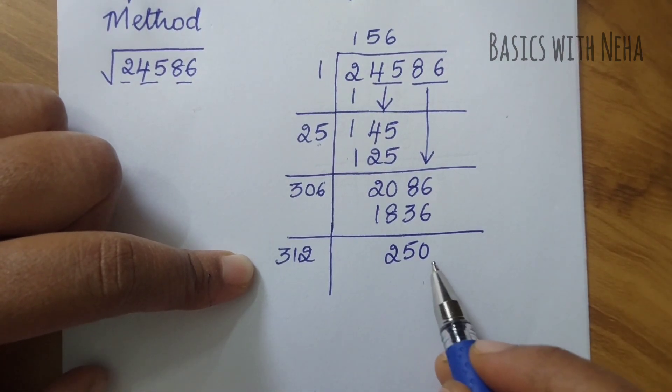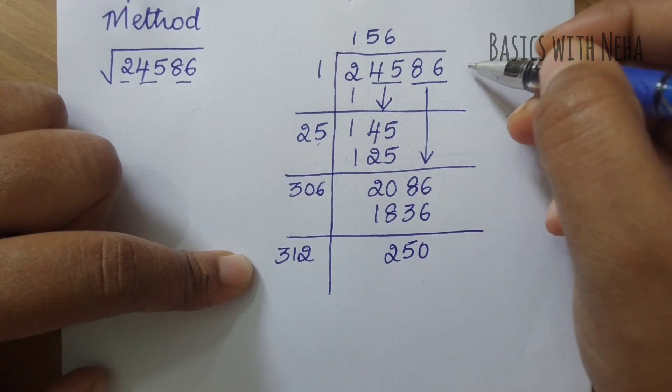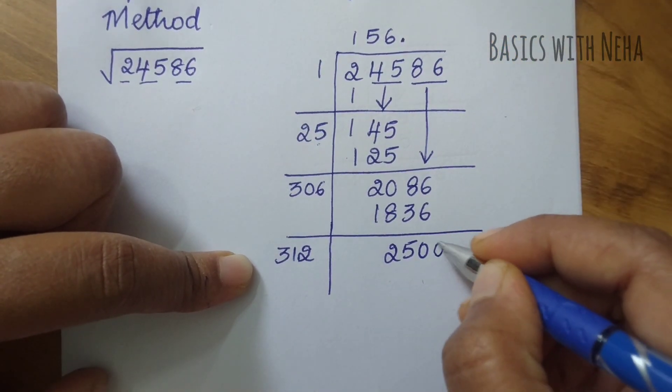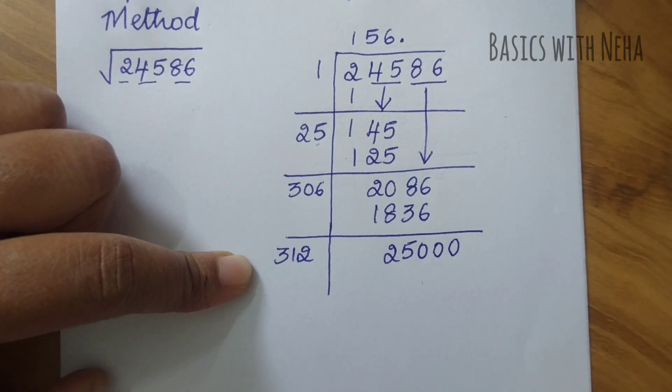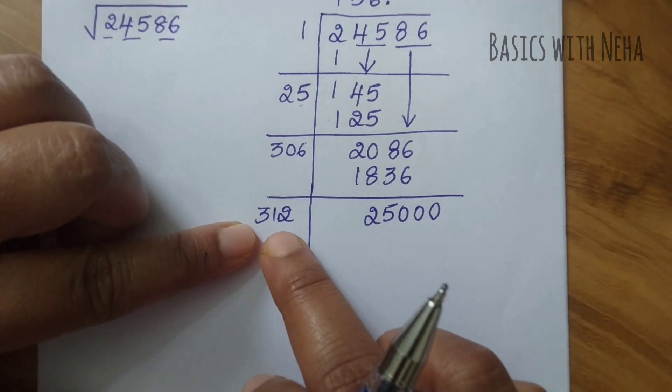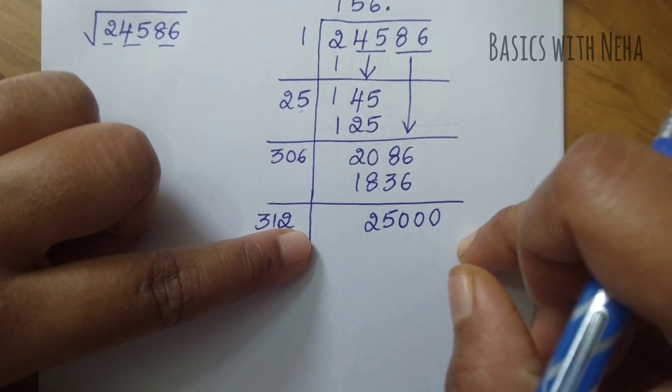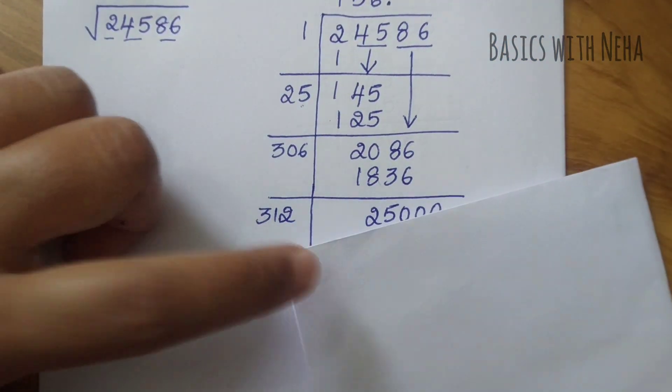Now for 250, I have to take another pair here. Whatever comes after this will be in the decimal place, so I have to take two zeros here. Now I have to see, 312 with one number into the same number will give me 25000 or less than 25000.